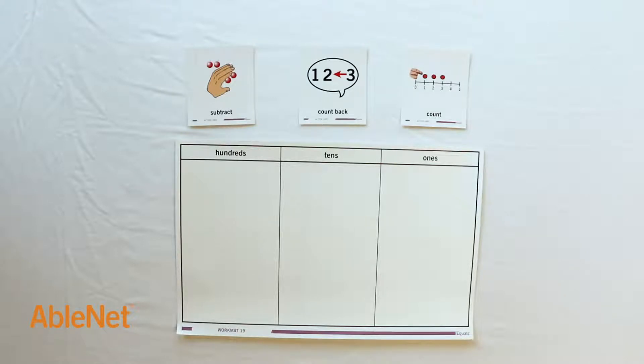The problem states Darielle brought $42 to the mall. She bought a pair of pants. Darielle has $14 left. How much money did the pants cost?